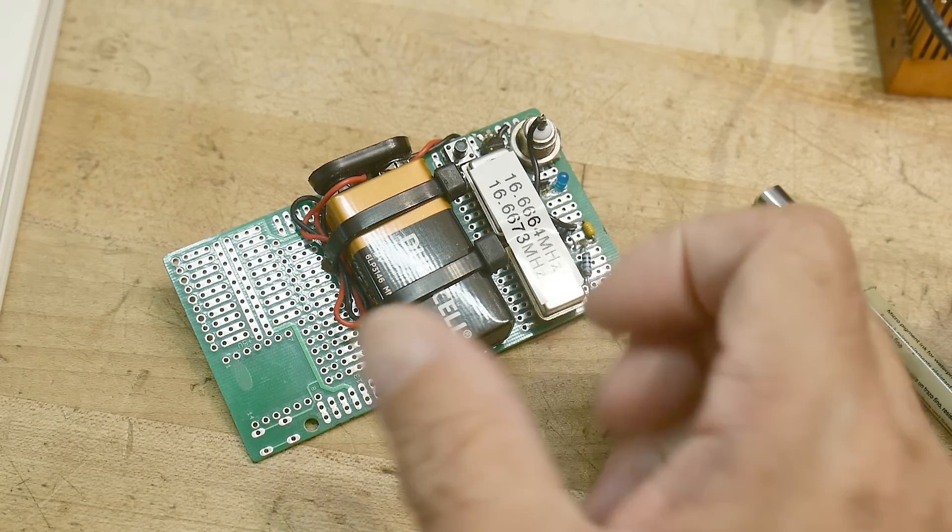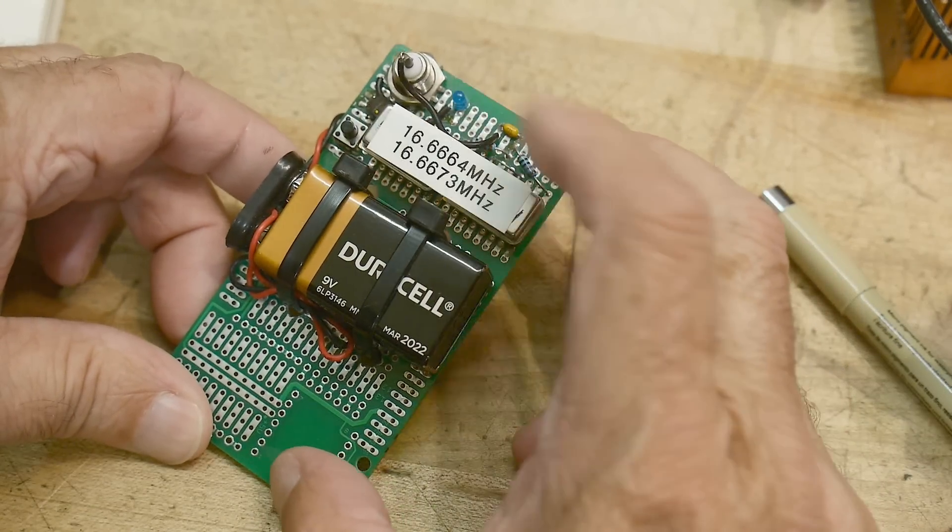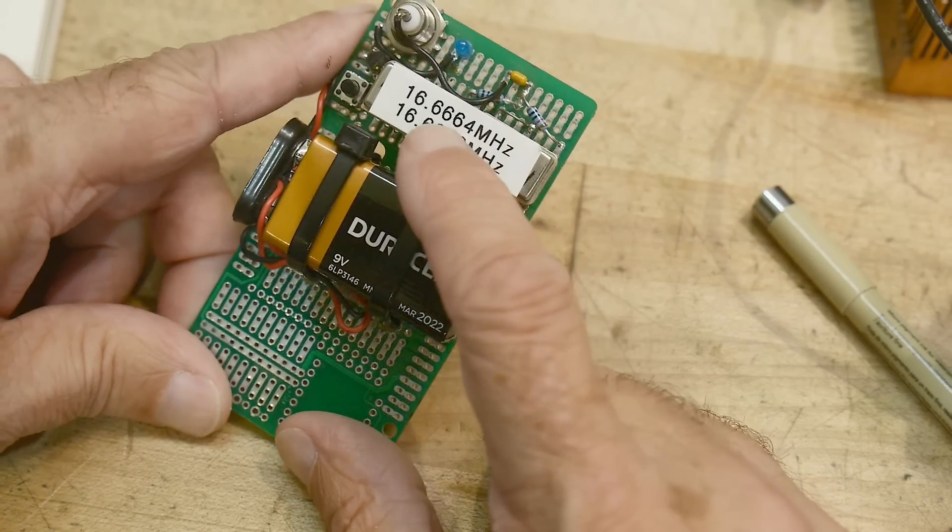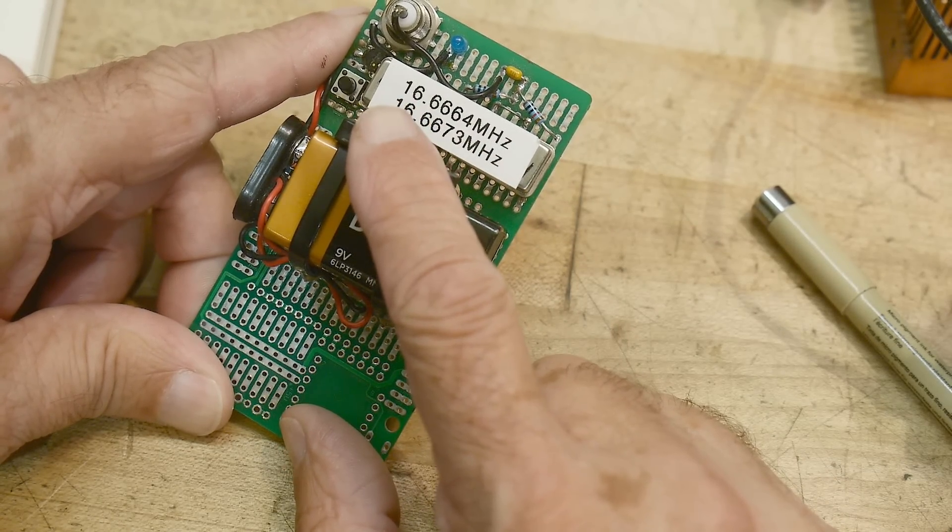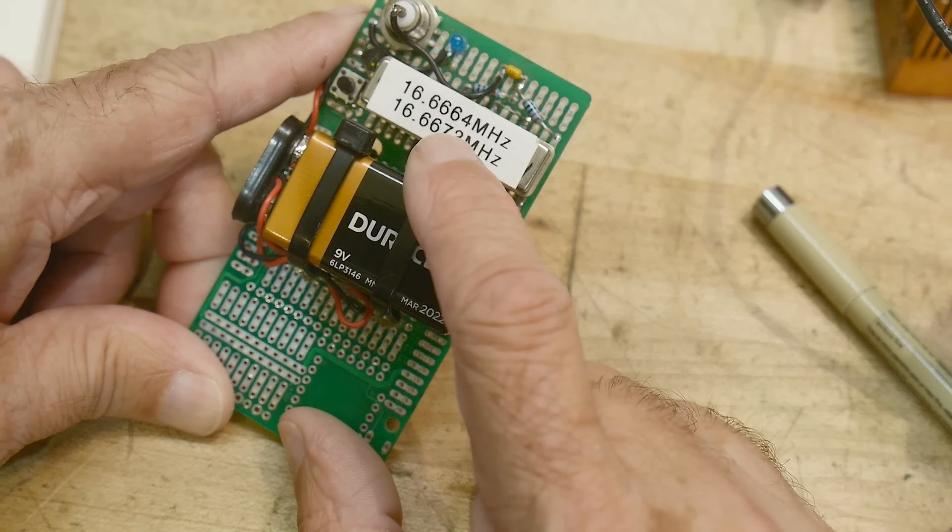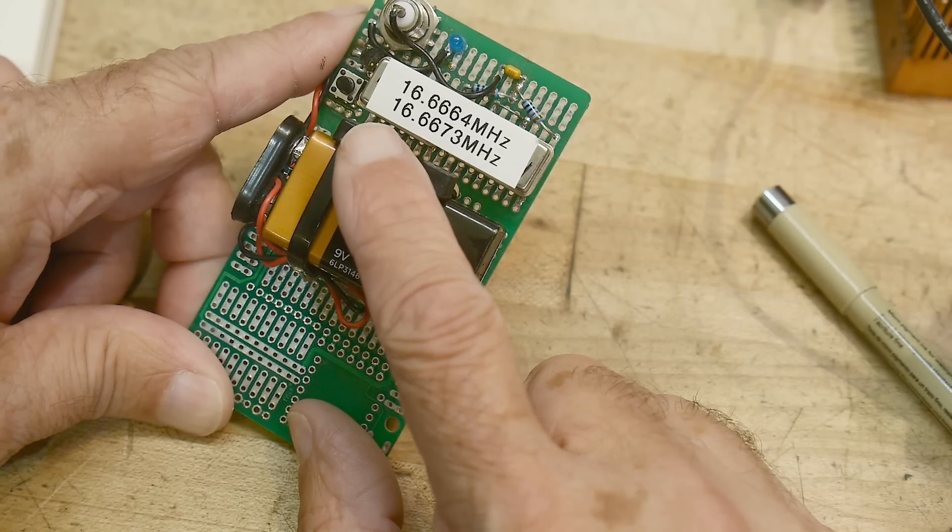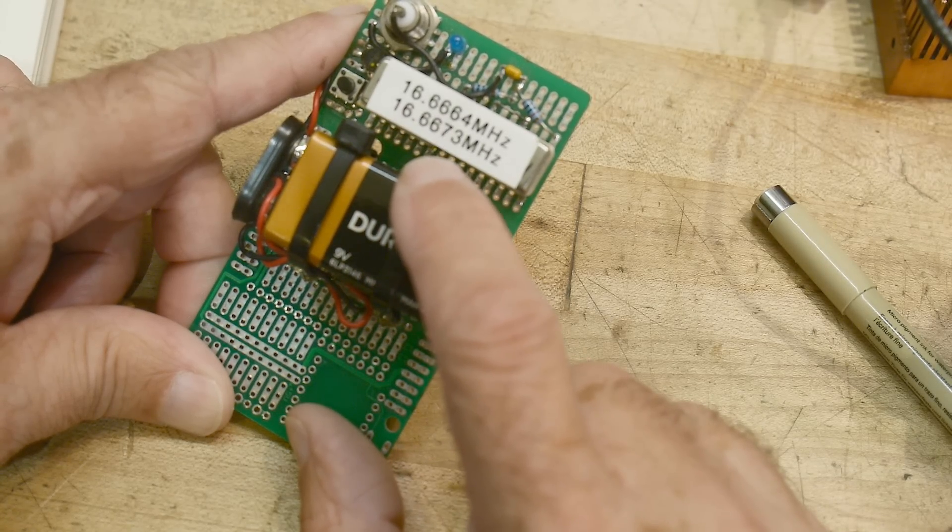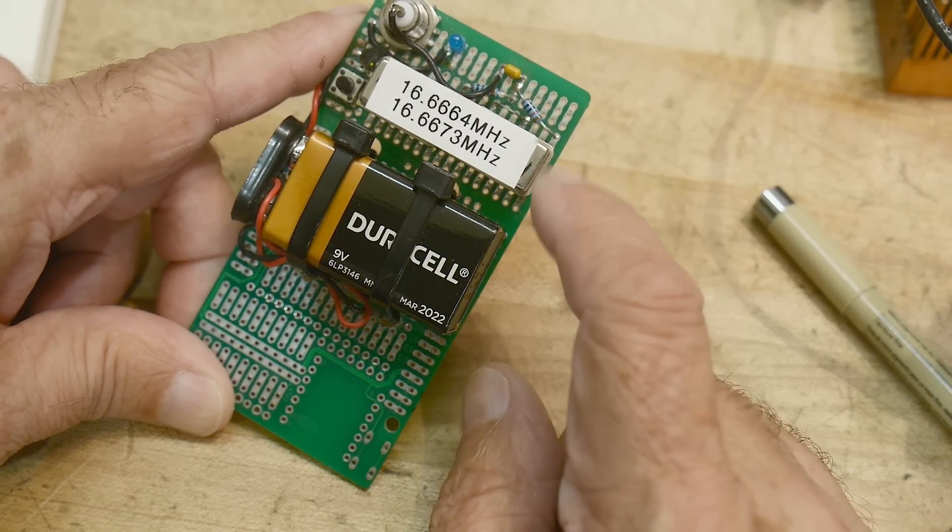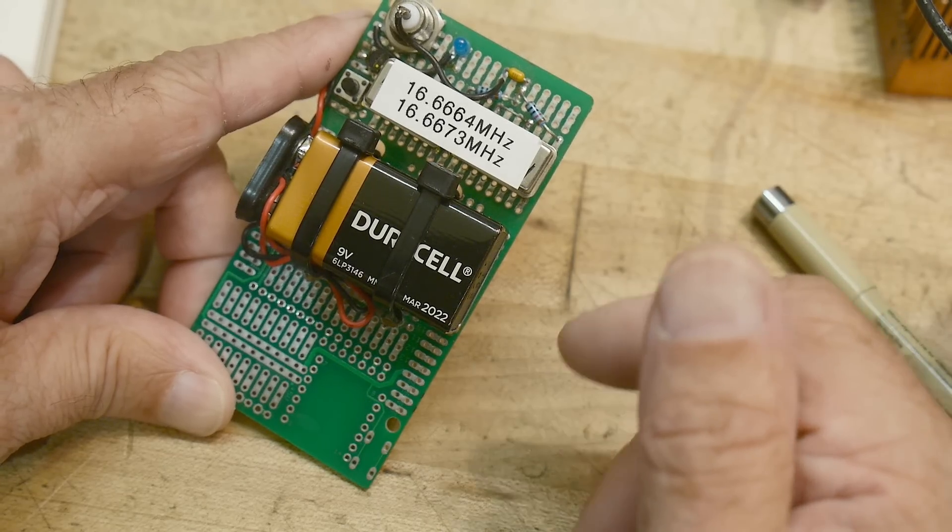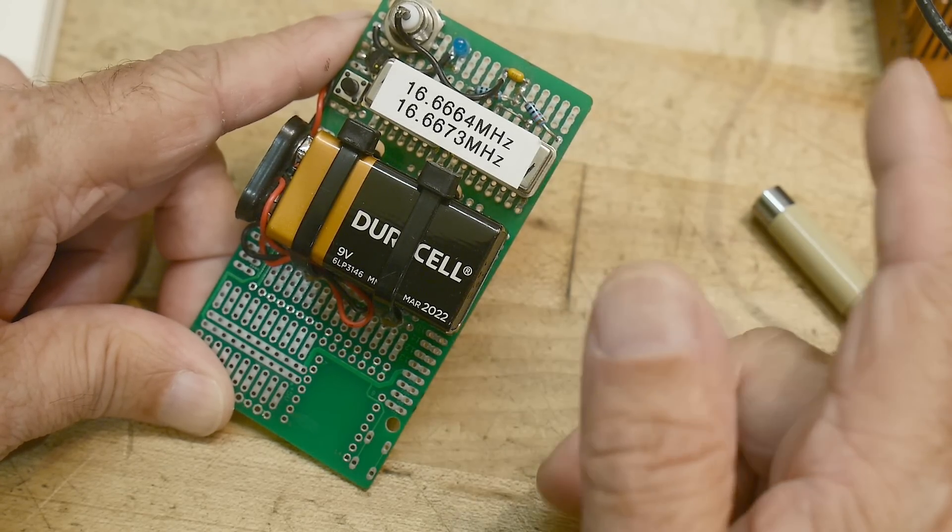So I built this thing. It has two oscillators and it has one oscillator that measured 16.6664 and one oscillator that measured 16.6673. So they're about one kilohertz apart. I think it's 890 hertz apart.